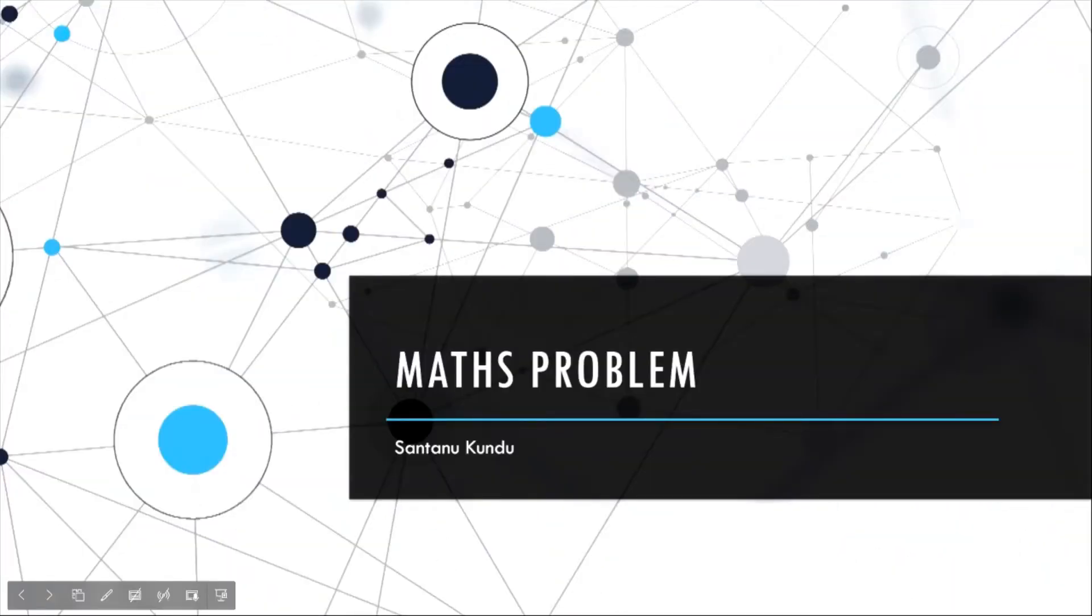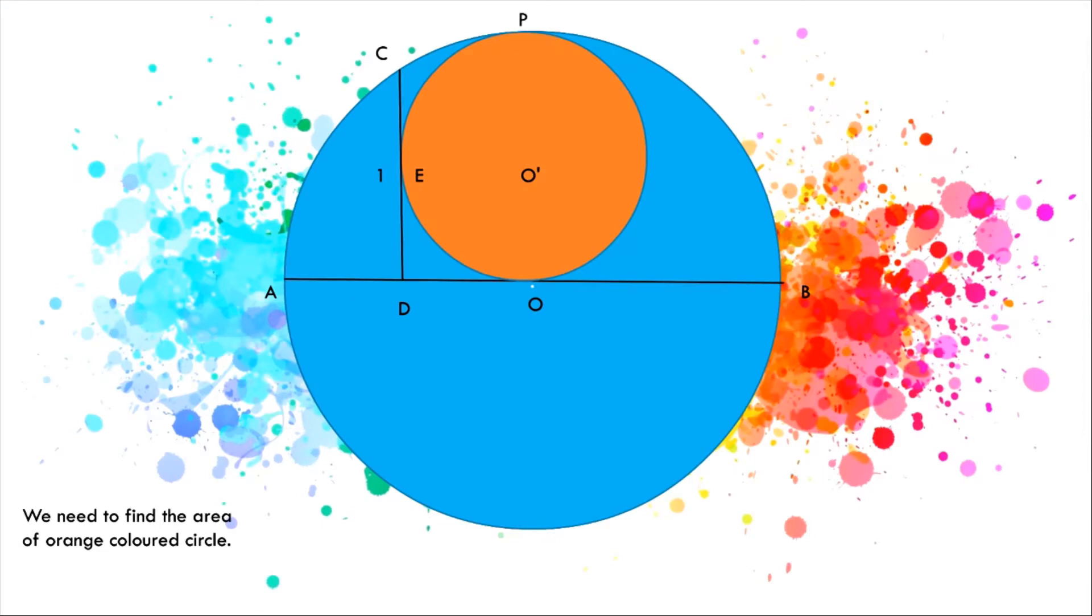Hello everyone, welcome to my channel. Today I'm going to discuss a simple mathematics and geometry problem, which is a kind of puzzle. The problem states that AB is a diameter of the blue circle, O is the center of that circle, and D is a point on the diameter.